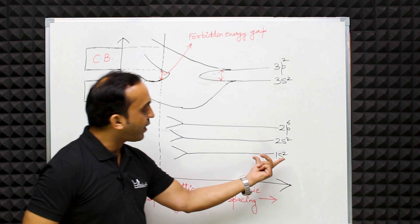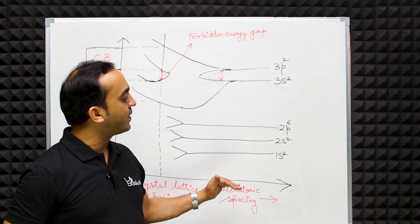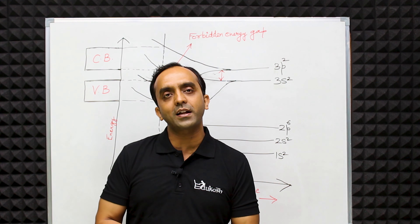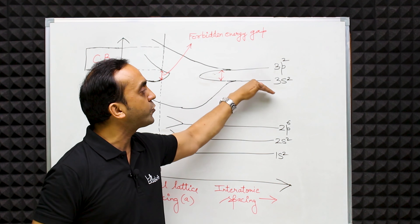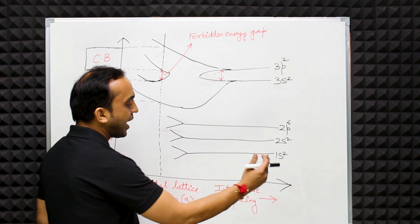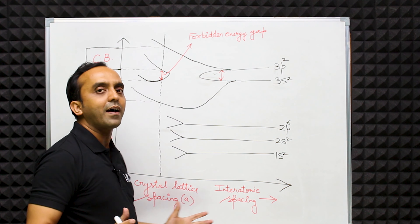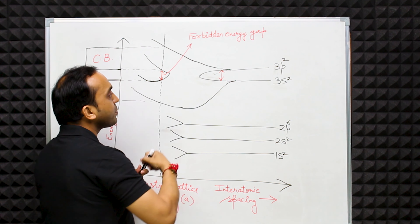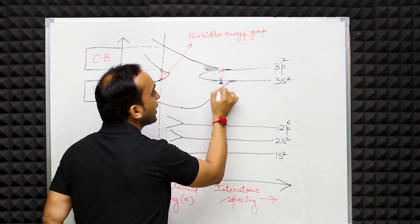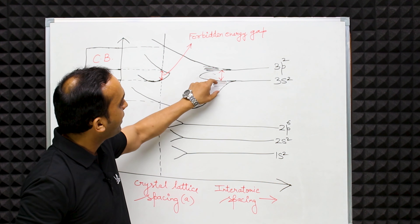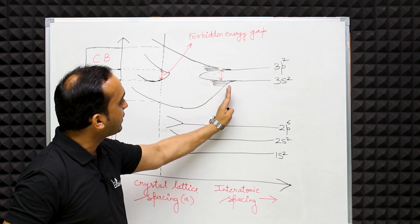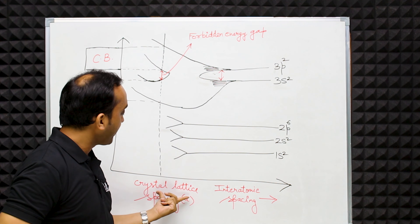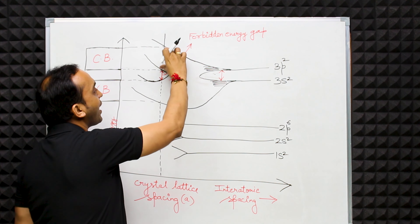Now we will form the diagram of energy band formation in solids. We see energy levels 1s², 2s², 2p⁶, and we are mostly interested in the outermost orbit, which is 3s² and 3p². As atoms come closer together, the 3s² and 3p² levels start to split and create bands. Each electron gets a slightly different energy level, forming distinct energy bands. As we reduce the interatomic spacing, these bands eventually merge and then separate into two distinct bands.